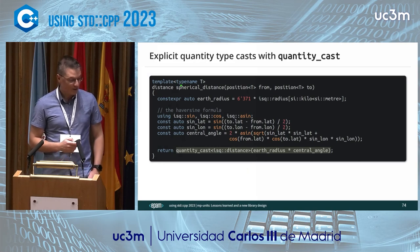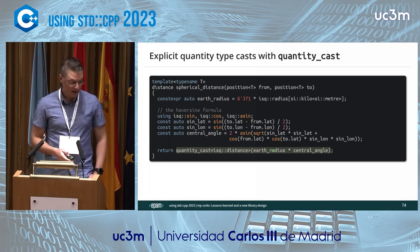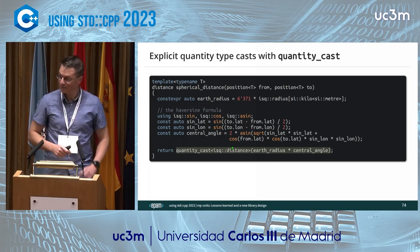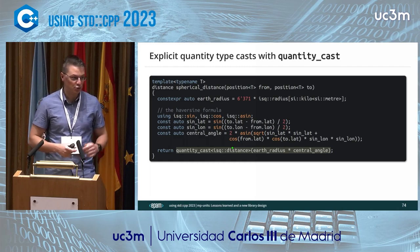There's one more thing to show here. I have to use a 'using' declaration for sine and cosine because I'm passing a quantity of ISQ angular measure. You might expect ADL to find the right namespace from this argument, but the C++ standard explicitly states that non-type template arguments do not contribute to the set of associated namespaces for ADL. So ADL doesn't work here.